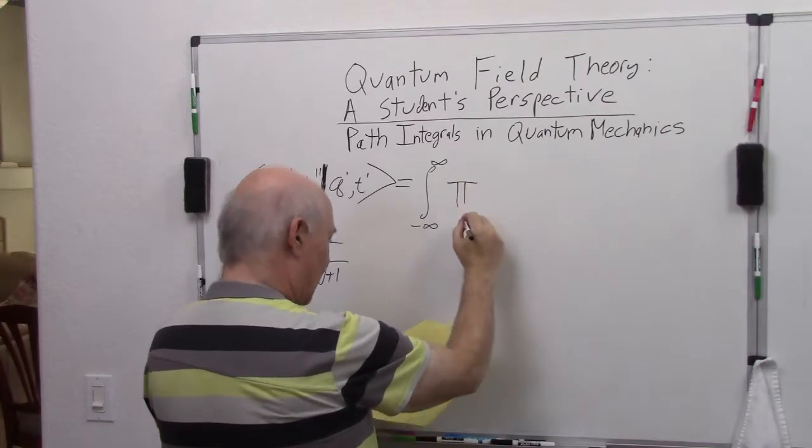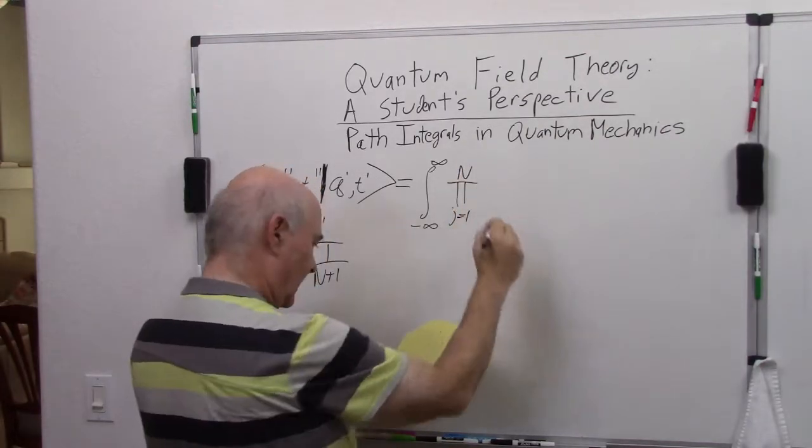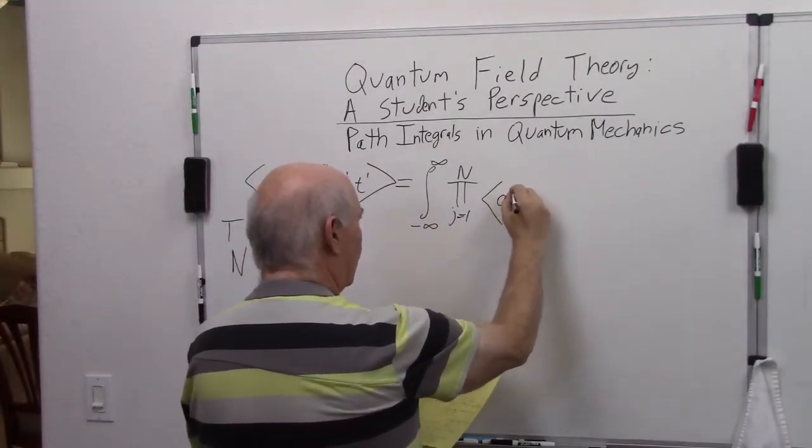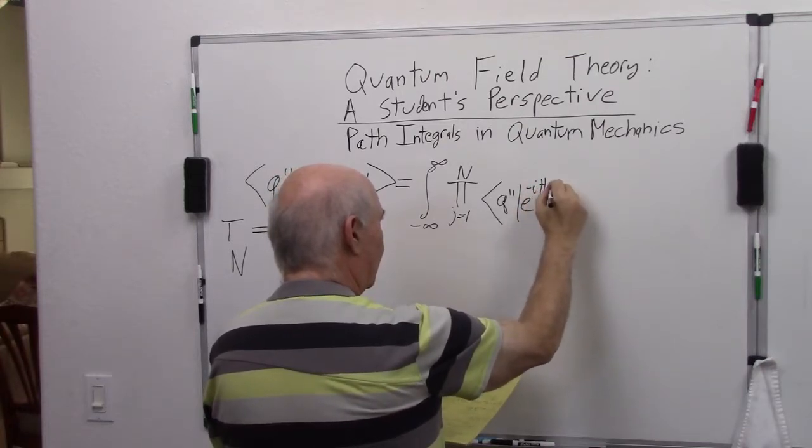I write it as a product from j equal to n, q double prime, e to the minus i h delta t.